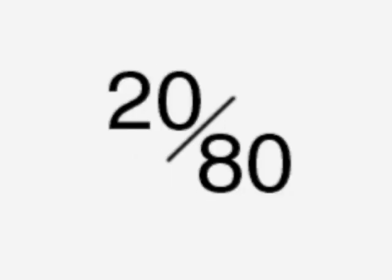A patient who scores 20/80 can see at 20 feet what a person with normal acuity can see at 80 feet.